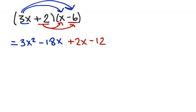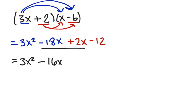Look to see what like terms you have to combine. In this case we have negative 18x and plus 2x, which combine to give negative 16x. So my final answer is 3x squared minus 16x minus 12.